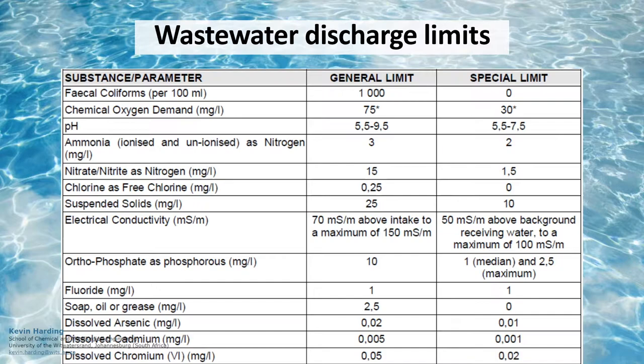The government sets limits as to the quality of water. As an example, wastewater discharge limits stipulate the pH, COD, coliform levels, as well as various chemical limits that need to be met.